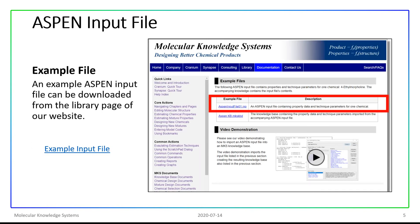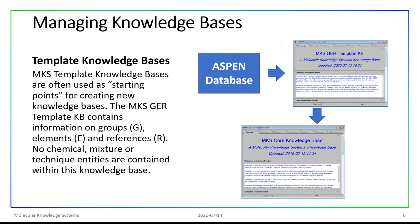An example Aspen input file can be downloaded from the library page of our website. Or you can use your own Aspen input file if you have one available. We first recommend importing values from an Aspen input file into an MKS template knowledge base. This gives you the opportunity to view the data, verify its accuracy, and only then decide to import it into your core knowledge base.